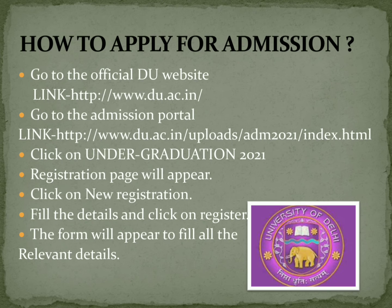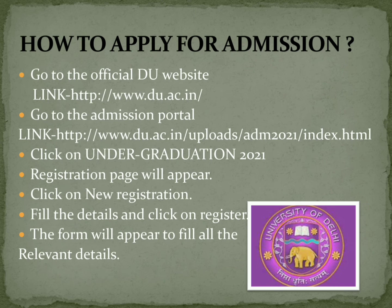After clicking register, you will log in using your email and password, and then the actual DU admission form will appear. You will fill all the details — there are eight total columns to fill step by step. Up to column 7 you fill in your details, and column 8 is the payment option. After filling the payment, your registration will be successful.